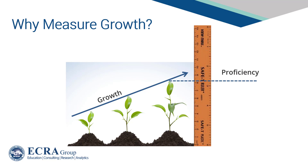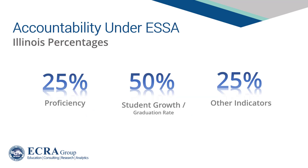Focusing school improvement and accountability on student growth overcomes two major challenges often cited with proficiency rates. First, measuring growth at the student level removes confounding factors attributed to different groups of students, demographic shifts, cohort effects, differential standards across grade levels, etc., that create variation in proficiency rates unrelated to school performance. And second, many school improvement efforts target students that are well below or well above the proficiency standard, making it likely that proficiency rates will remain unchanged despite significant improvements.